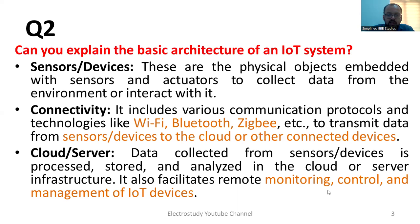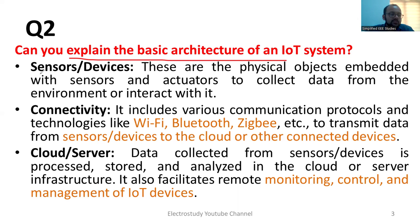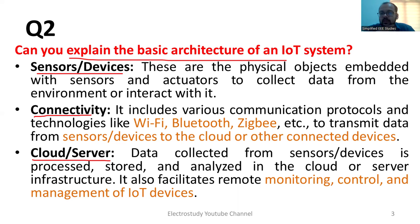Let me discuss the next question: Can you explain the basic architecture of an IoT system? An IoT system comprises sensors and devices. There is connectivity — you can use ZigBee, Bluetooth, Wi-Fi modules, etc. We also require a cloud server where you can store data and communicate. These are the basic segments of an IoT system.